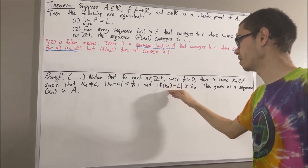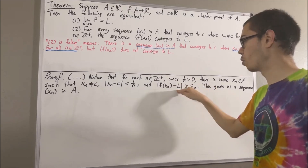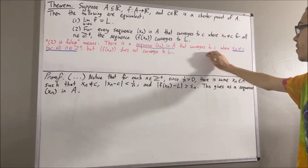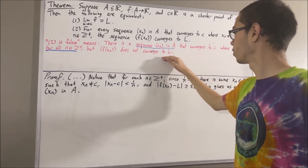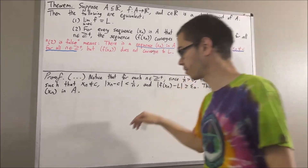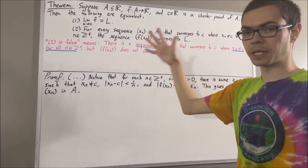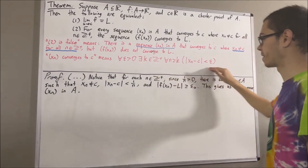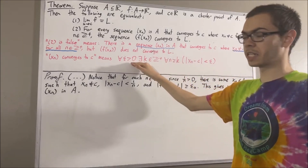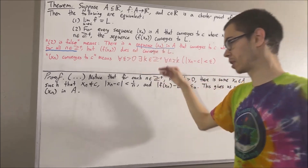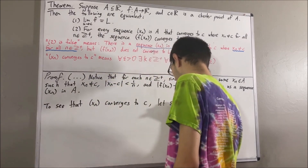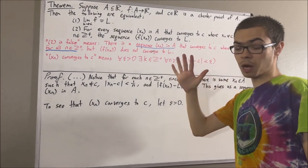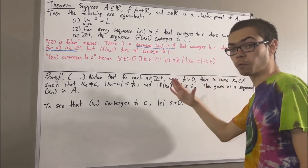This tells us that F of Xn always stays some fixed distance away from L, suggesting it should not converge to L. All that's left is to show these two properties hold. Let's first show that Xn converges to C. By definition of the limit of a sequence, we need to prove: for every positive real number epsilon, there exists a positive integer K such that the inequality holds. By the Archimedean property, we can pick some positive integer K such that one over K is less than epsilon.